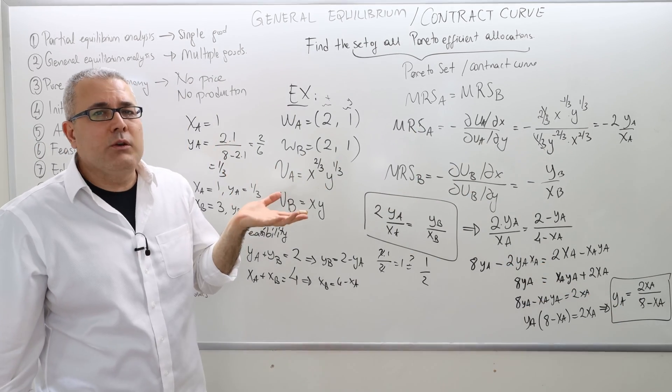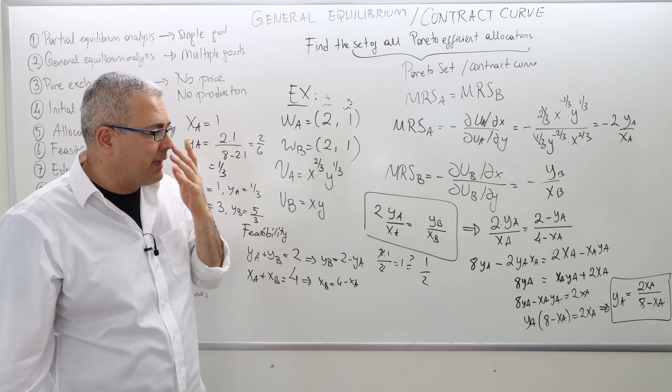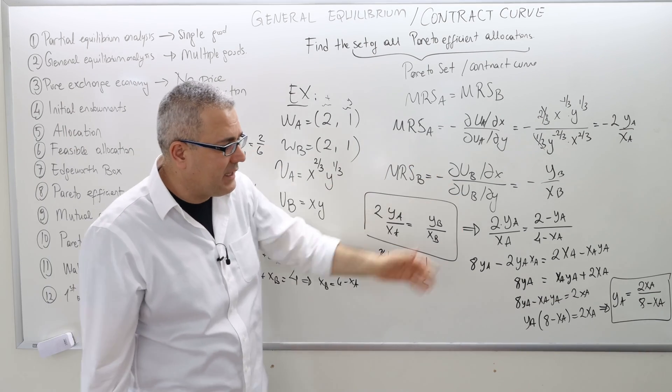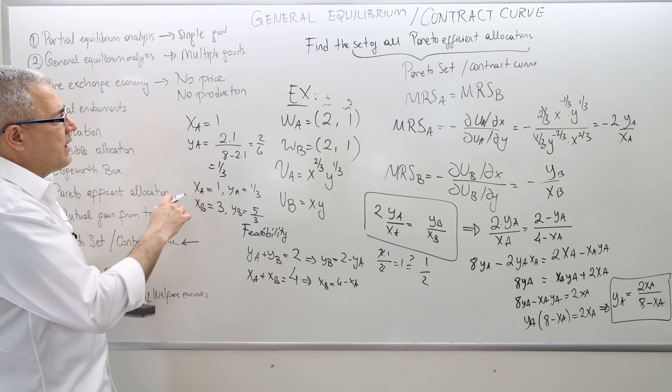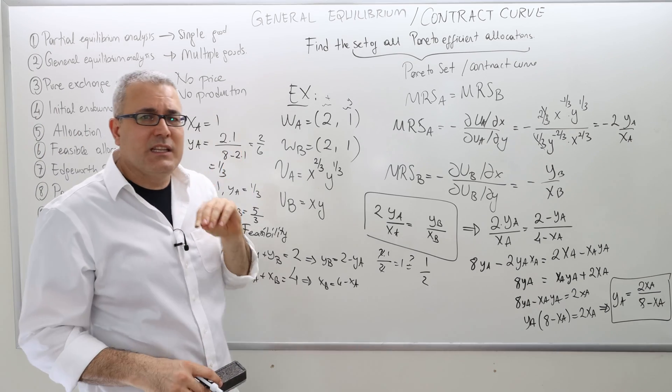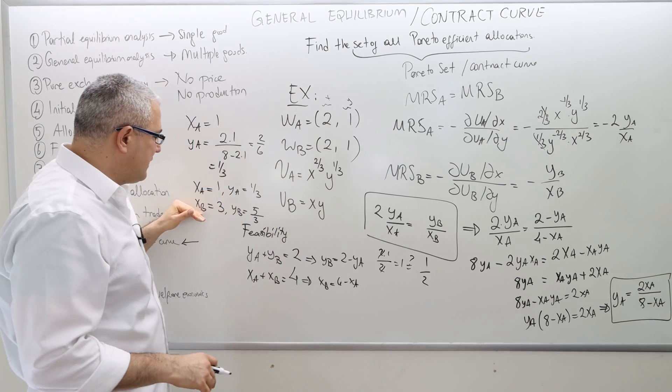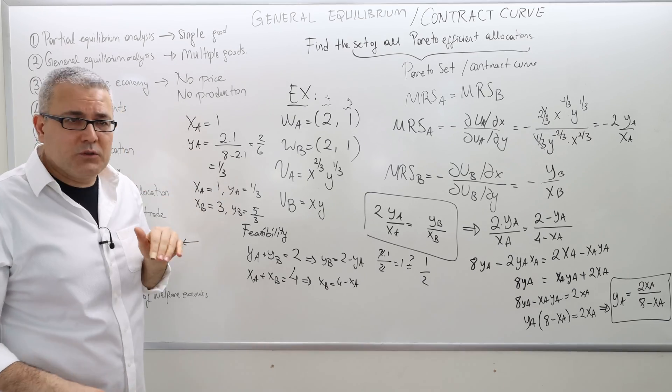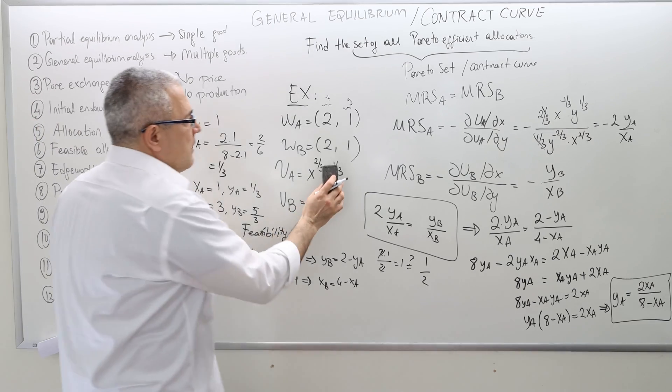Pick any other point. x_A is 0. So if x_A is 0, well, then y_A should be 0. So agent A gets nothing. And hence, by feasibility, agent B gets everything is also Pareto-efficient.